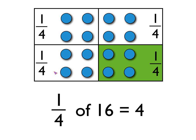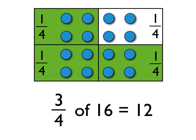So, if we want one quarter of 16, we shade in one of the groups, and as you can see, we'd have four blue dots. So, one quarter of 16 is four. We could move this on and have a look at what two quarters of 16 is — two quarters of 16 would be eight, or three quarters of 16 would be 12.